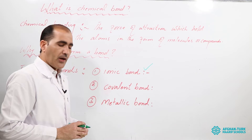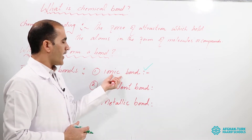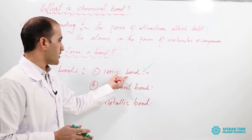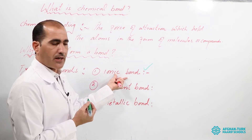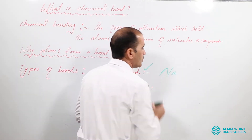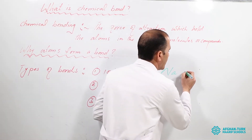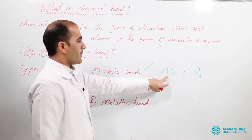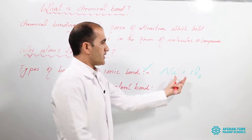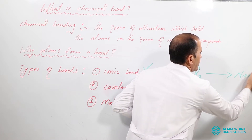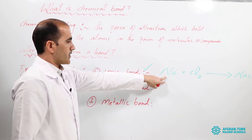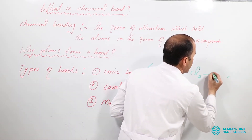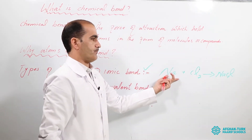What is an ionic bond? You can define it in different ways. The first way: the force of attraction between metals and non-metals. For example, if you have the metal sodium, which belongs to group number one in the periodic table, and another atom called chlorine — this is a metal and this is a non-metal. The force of attraction between metals and non-metals — we call it ionic bonds.